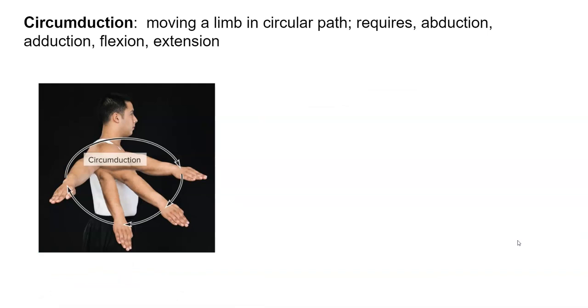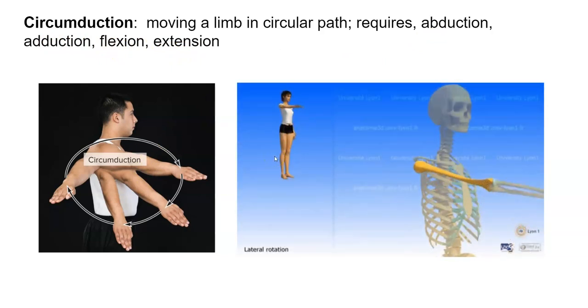Circumduction. This is moving the limb in a circular path. So what that does, that combines all the motions we've looked at: abduction, adduction, flexion, extension, all into one circular motion. So one way you can think about circumduction is if you were drawing a big circle on the chalkboard.